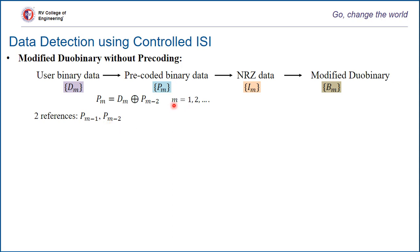For m equal to 1, it is d1 — the first bit — XOR (modulo-2) added with pm minus 1, which is the first reference. When m equal to 2, it is d2 XOR with pm minus 2, which is p0. So there are two references here: pm minus 1 and pm minus 2. When m equal to 1, you need two references to generate the first two bits of the sequence.